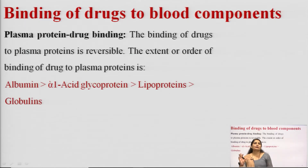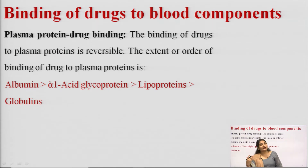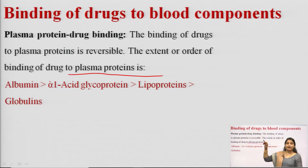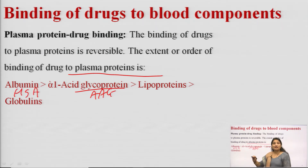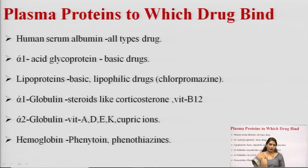In plasma protein drug binding, the drug binds to plasma proteins in a reversible manner due to weak chemical bonds. There are different types of plasma proteins: albumin (human serum albumin), alpha-1 acid glycoprotein (AAG), lipoproteins, and globulins. The order of binding to plasma proteins is: albumin binds the maximum amount of drug, followed by AAG, lipoproteins, and globulins.